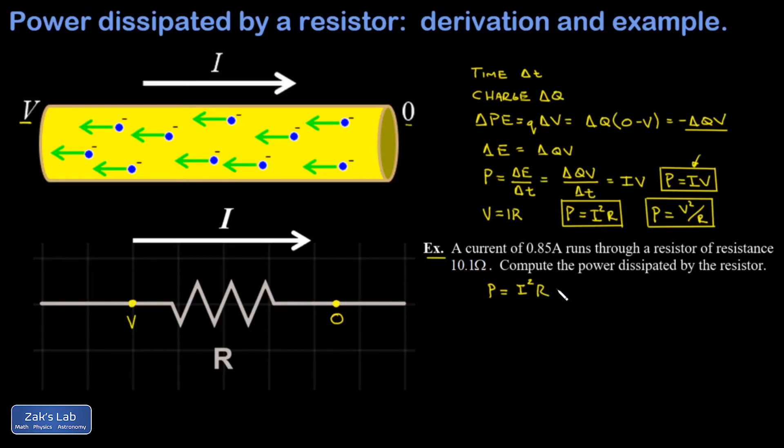And I get 0.85 amps squared times a resistance of 10.1 ohms. And I get a power of 7.3 watts out of this.